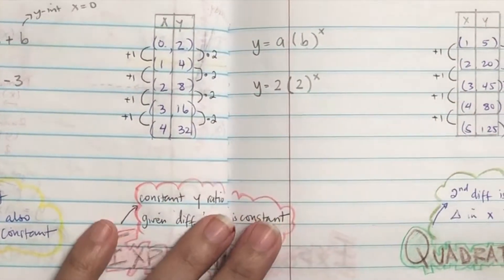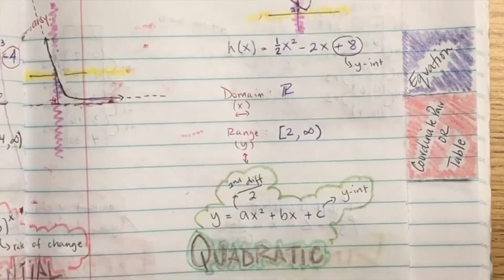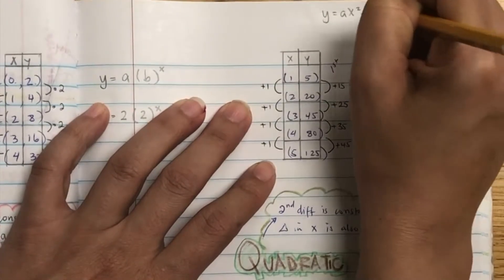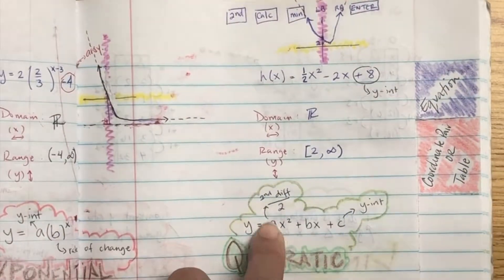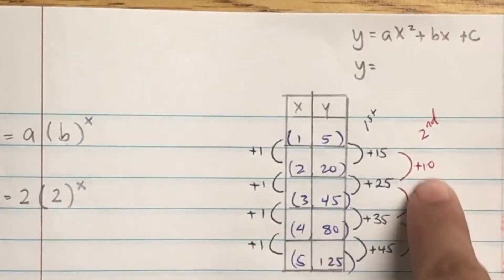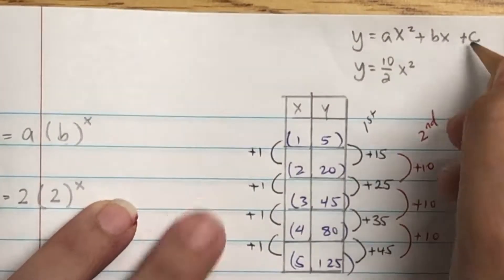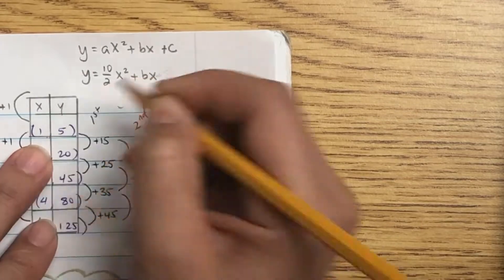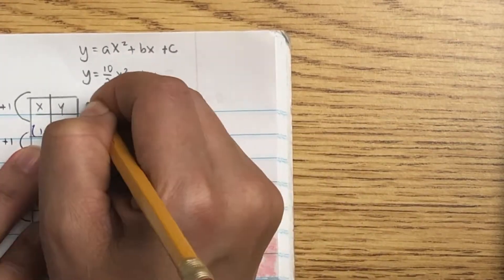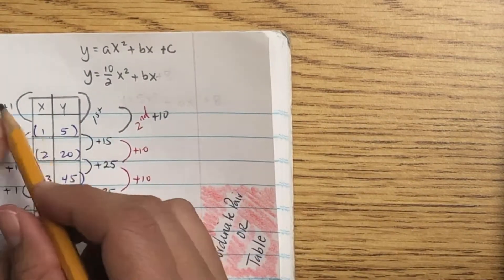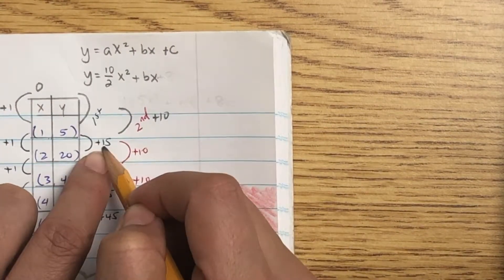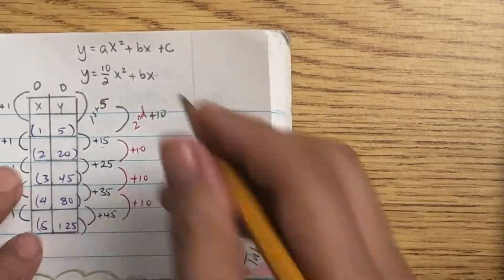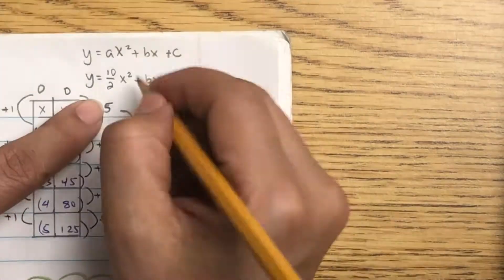For quadratic, it's y equals ax squared plus bx plus c, where a is your second difference divided by 2. So my second difference is 10 divided by 2, which is 5x squared plus... I don't know what bx is. And c is my y-intercept, so I need to know where x is equal to 0 again. So I need to go back one more. You want to subtract 10 from 15 to get 5, 5 plus 10. Then doing it one more time. If that's plus 5, it's going to be 5 minus 5 equals 0, 0 plus 5 is 5. So the y-intercept is at 0.